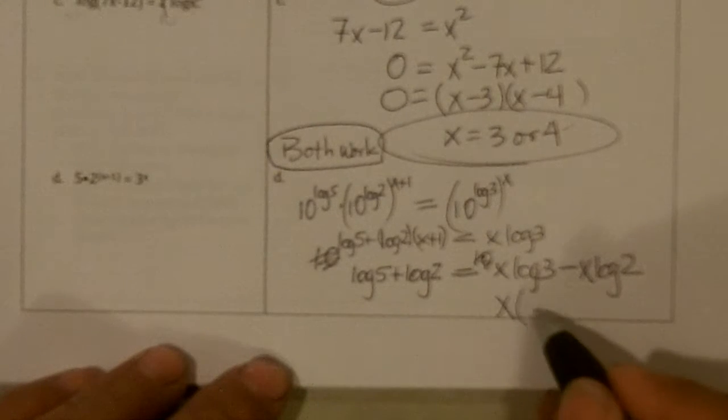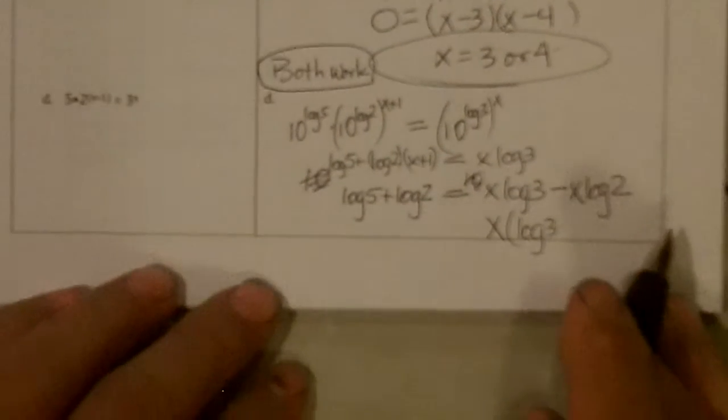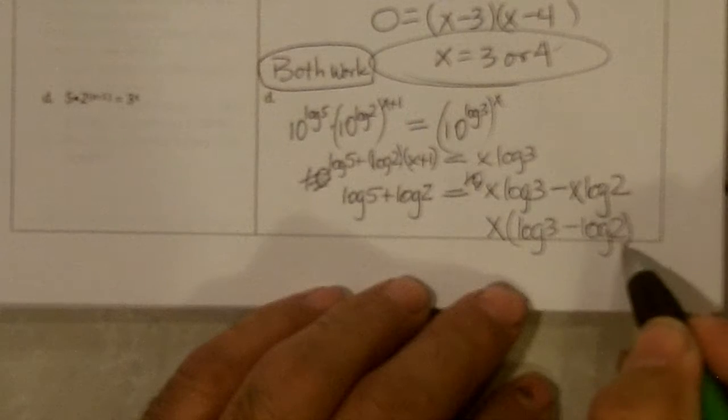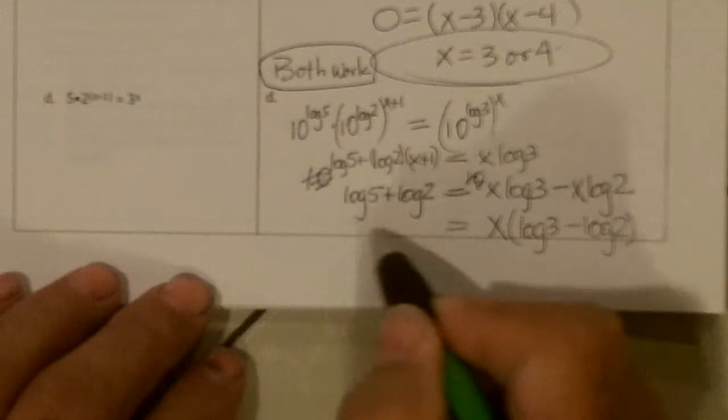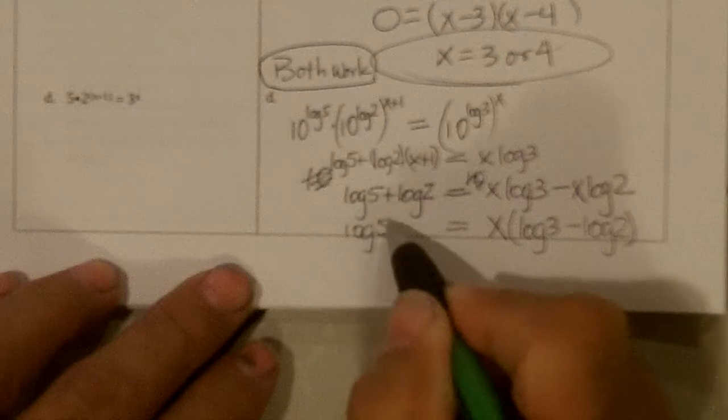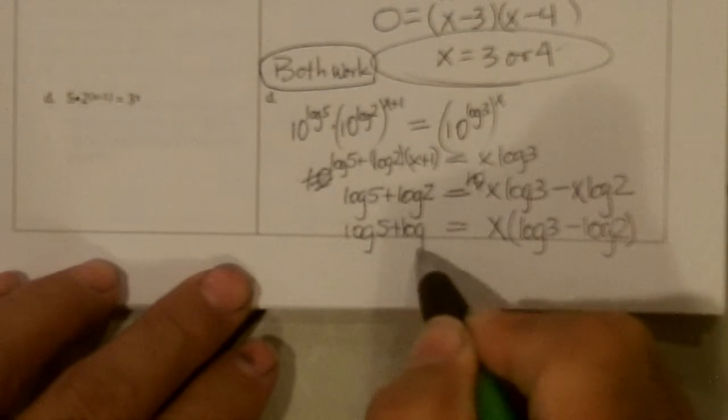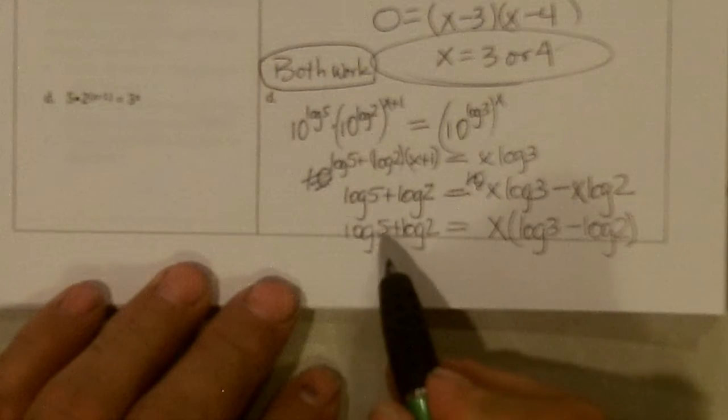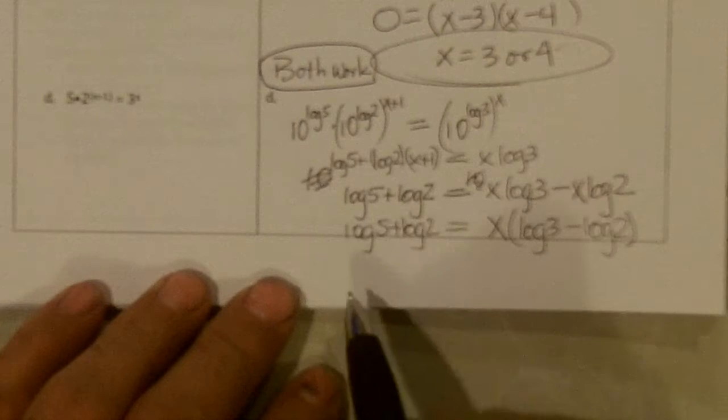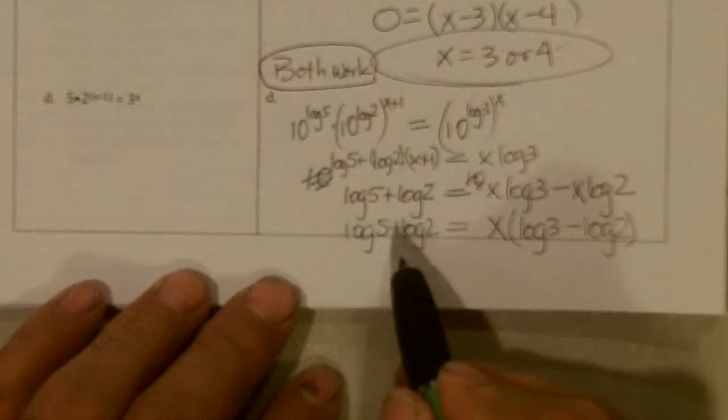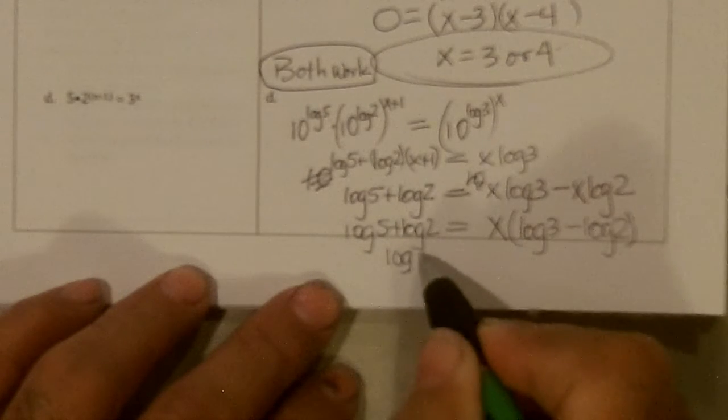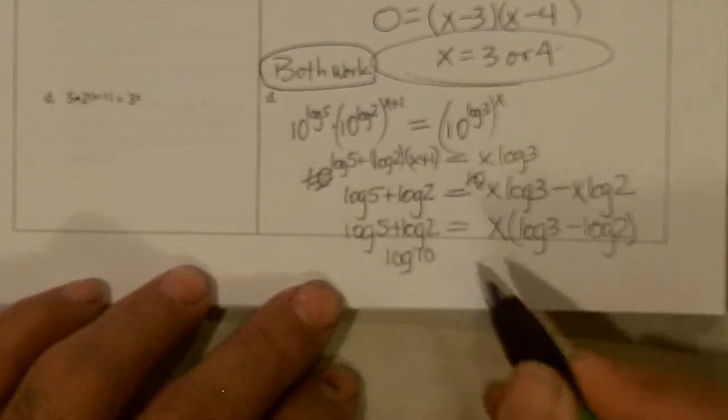And I'll have log 3 minus log 2 equals log 5 plus log 2, and I'm going to divide both sides by that, but I'm also going to do a little sum and product rules. This will be log 5 plus log 2 turns into log of 10, because adding, you multiply them.